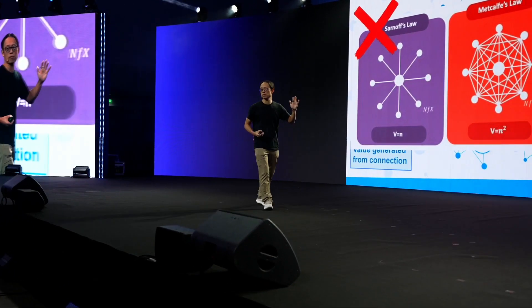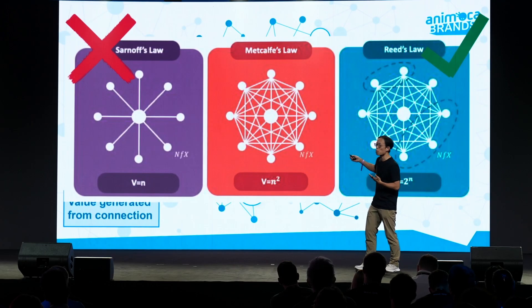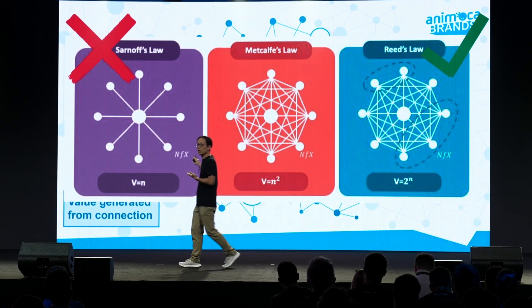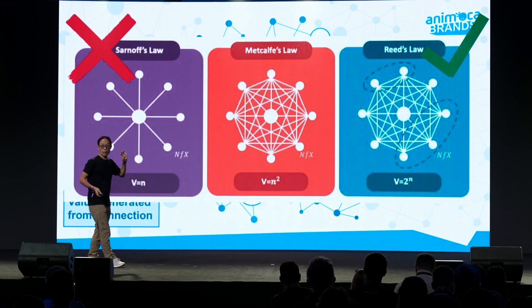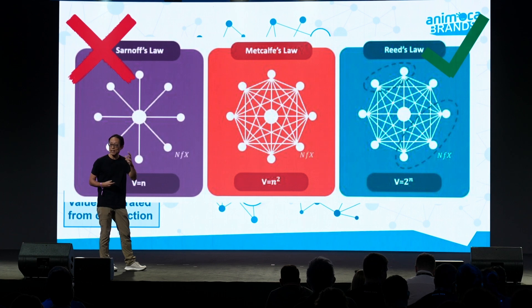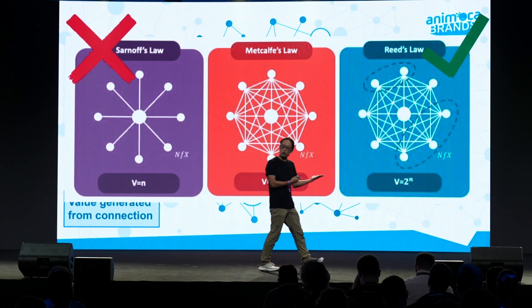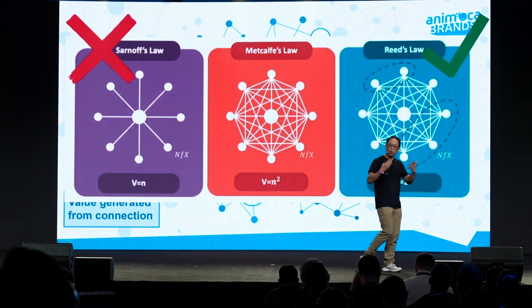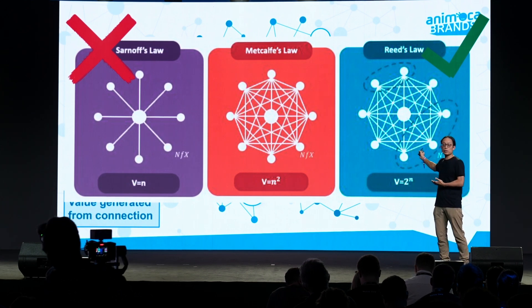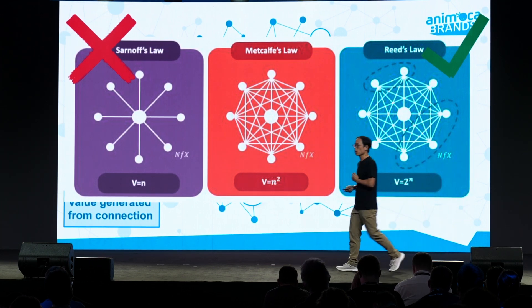There are different types of network effects. The classic Sarnoff's law is a hub-and-spoke model where you're creating all the value and others have access to it — that's not a very powerful network effect. You may have heard of Metcalfe's law, which is probably the more famous one. But Reed's law is a more relevant example of how you build network effects within a blockchain ecosystem, because it's possible that within that network, some of the token ecosystems you're building might even be bigger than the L1 or L2 you're building on top of, and as a result will build more value broadly in that ecosystem.